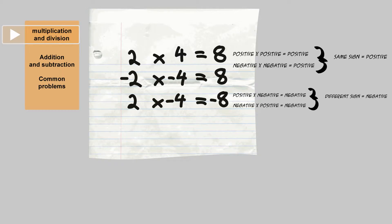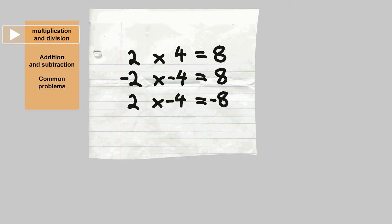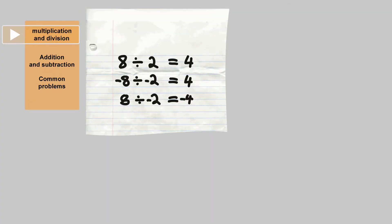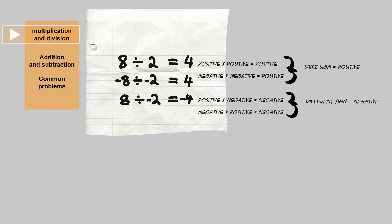Division works in the same way as multiplication. Here I give a few more examples. Wherever the signs are the same, they are always positive. Where the signs are different, the answer is always negative.